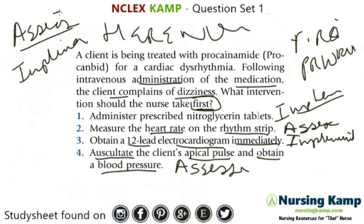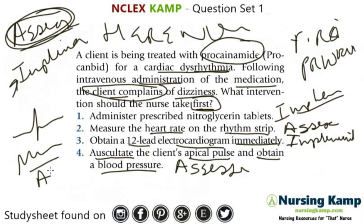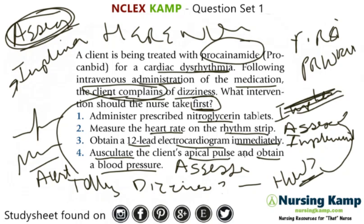The rule of the nursing process is we always assess before we implement. We're giving an anti-dysrhythmic for dysrhythmia — it could be A-fib, it could be V-tach — but the patient is somewhat alert and complaining of dizziness. Since I don't know what the dizziness is from, I need to assess. I'm not going to just give nitro because I don't know what's going on.